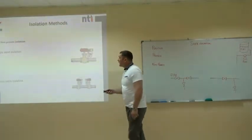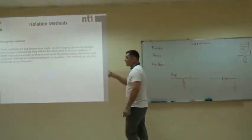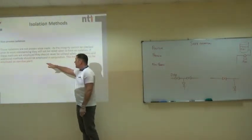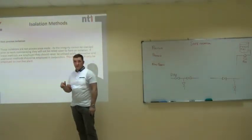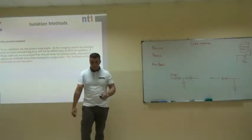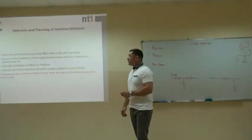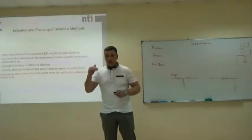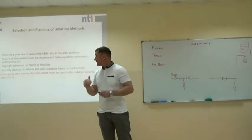Positive, proven, non-proven isolation. Non-proven isolation — the lowest form — should only be used on non-live equipment during shutdown. We should walk the line, ensure the P&ID reflects plant conditions, and make sure we use the most suitable isolation methodology for the hazardous energy we are trying to isolate.